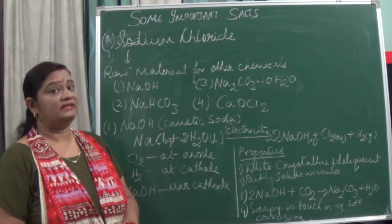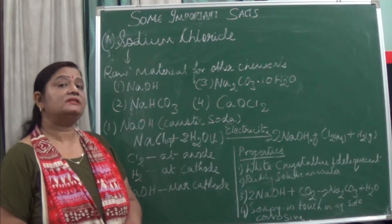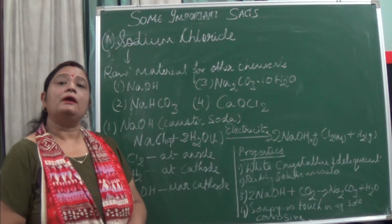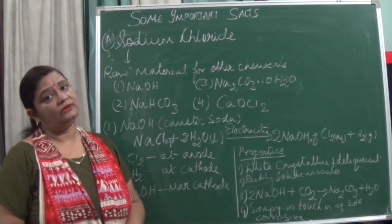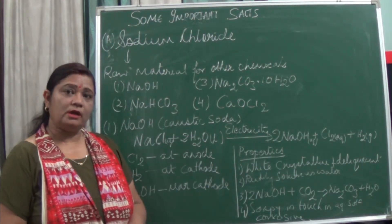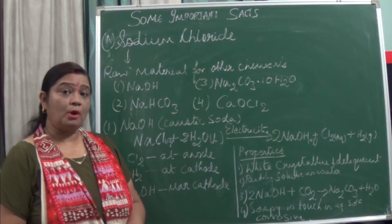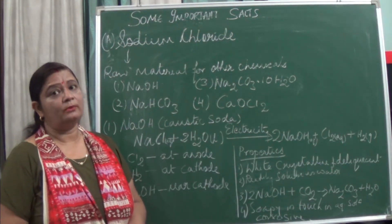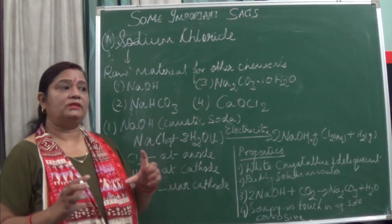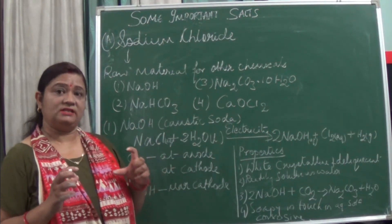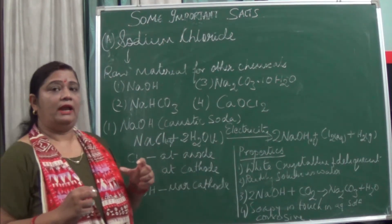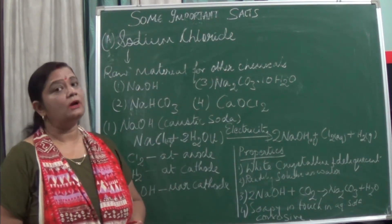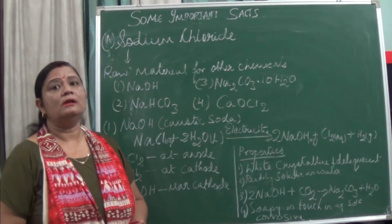There are three types of salts: acidic salt, basic salt, and neutral salt. An acidic salt is formed when a strong acid reacts with a weak base. A basic salt is formed when a strong base reacts with a weak acid. And when both strengths are equal — like a strong acid and a strong base — a normal salt is formed.